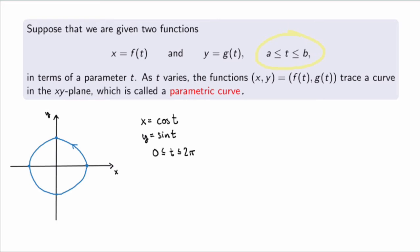If we have a parametric curve, can we get the corresponding equation satisfied by x and y? This is called a Cartesian equation for a curve, and to get it we need to get rid of the parameter t. In this case, there's a nice way using trig identities: x squared plus y squared equals cos²t plus sin²t, which equals 1 for any t between 0 and 2π. So x and y satisfy x² + y² = 1, which is indeed the equation of a circle of radius 1.